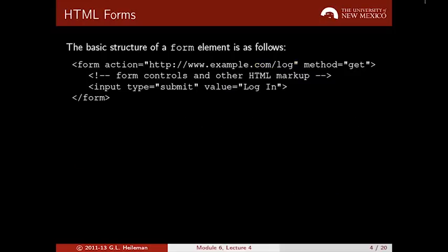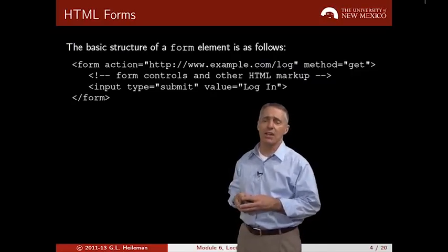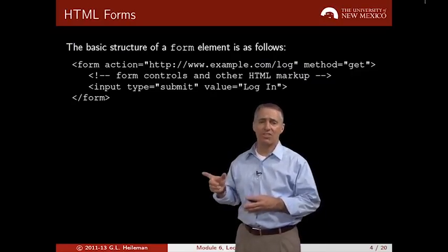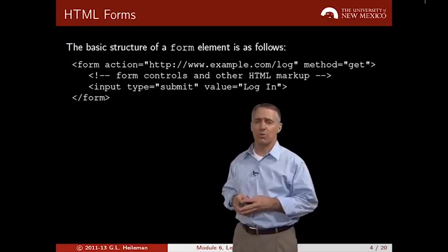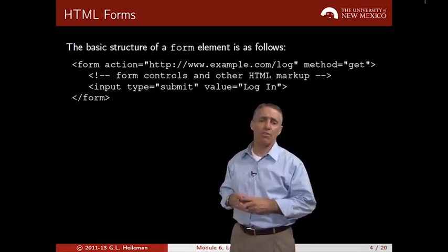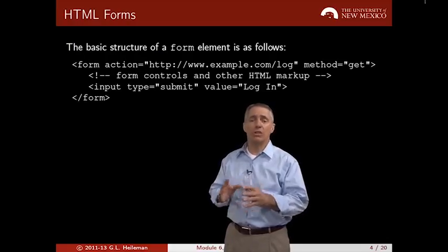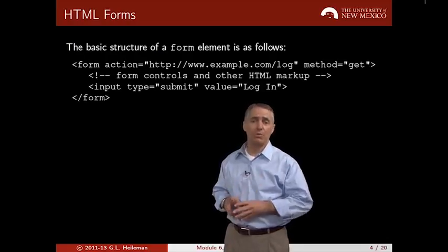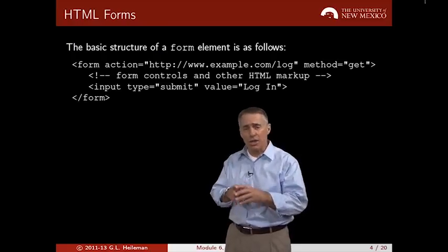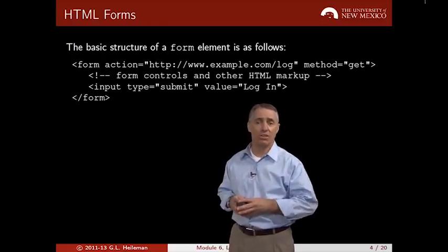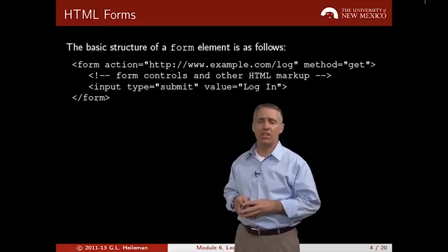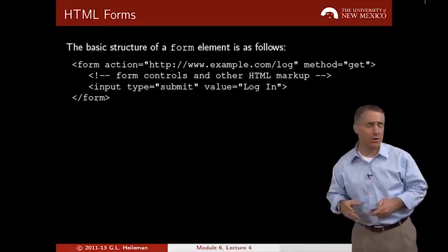This is the basic structure of the form element. You see the form tag with two attributes: an action attribute and a method attribute, and a comment showing where the form controls go. The input type submit creates a button, and the value 'login' means the button on the web page will say 'login'.